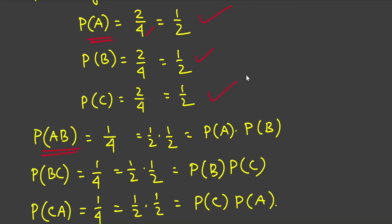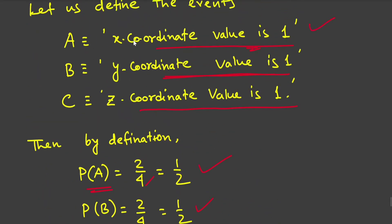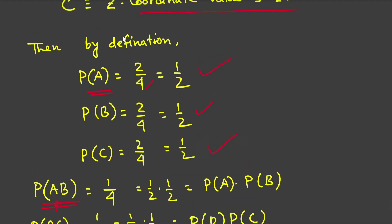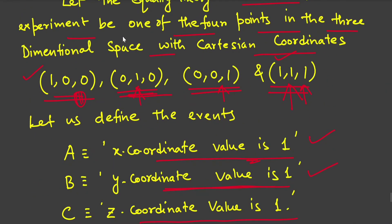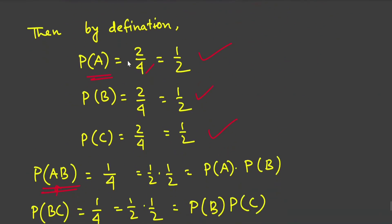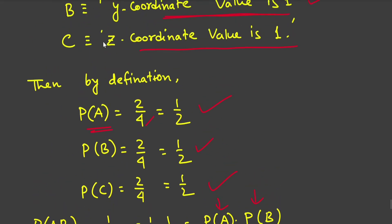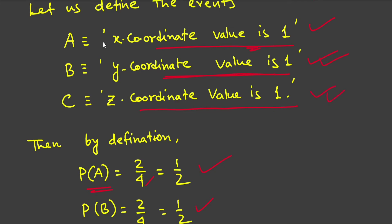Now P(AB) means the event where x-coordinate is 1 AND y-coordinate is 1. The only point satisfying both is (1,1,1), so P(AB) = 1/4. We can write 1/4 = (1/2)·(1/2) = P(A)·P(B), confirming A and B satisfy the independence condition.